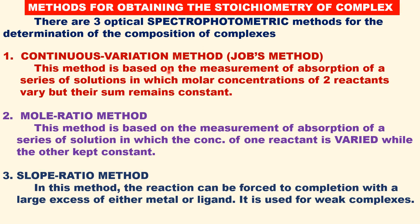There are three spectrophotometric methods for the determination of composition of coordination metal complexes. They are: one, continuous variation method — this is called Job's method. In this method, a series of solutions are prepared by varying the concentrations of both the metal and the ligand, and the absorbance of each solution is measured. The total concentrations of the two reactants, metal and ligand, remains constant.